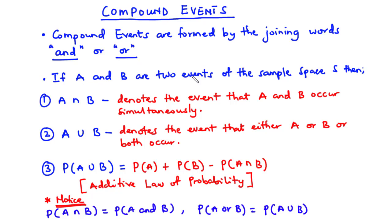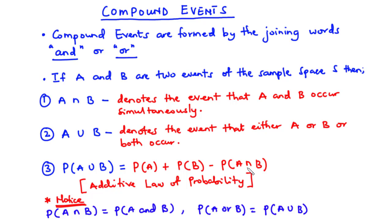Now if A and B are two events of the sample space S, then: 1. A intersection B denotes the event that both A and B occur simultaneously. 2. A union B denotes the event that either A or B or both A and B occur. 3. The probability of A union B is equal to the probability of A plus the probability of B minus the probability of A intersection B.